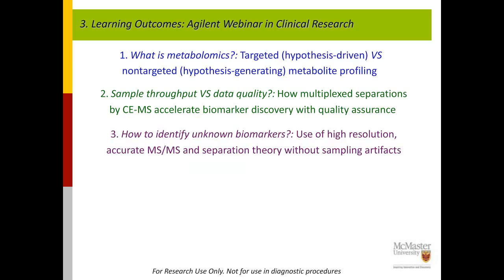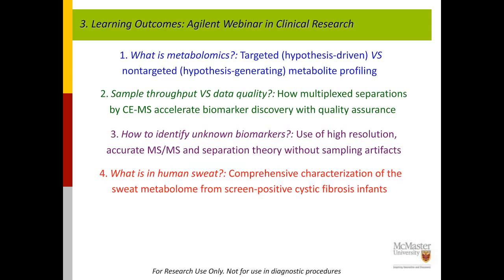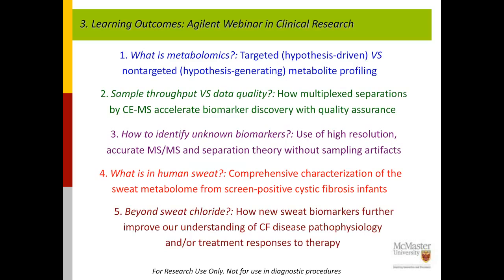Another challenge in the field is how to identify unknown biomarkers of clinical significance and reduce any bias or sampling artifacts. Particularly relevant to cystic fibrosis is the question: what is in human sweat? How can we use non-target analysis to characterize sweat and understand the fundamentals of disease pathophysiology? Could that be useful to go beyond sweat chloride to understand how the disease progresses and varies among individuals, even with the same genotype?